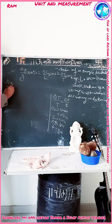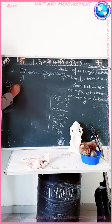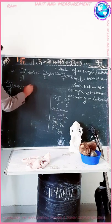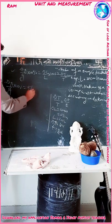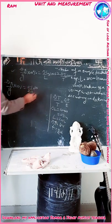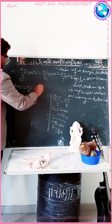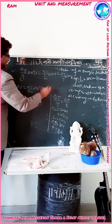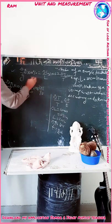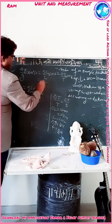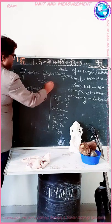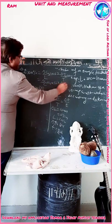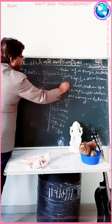So we write delta G upon G into 100 is equal to 0.1 upon 20 into 100 plus 2 into 1 upon 90, applying the formula delta L upon L into 100 percentage plus 2 delta T upon T into 100.